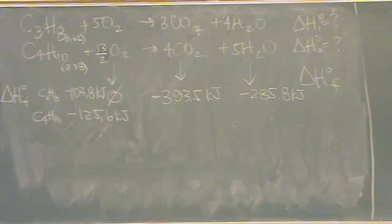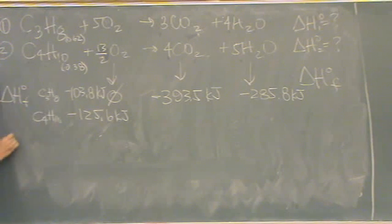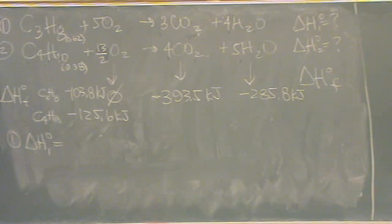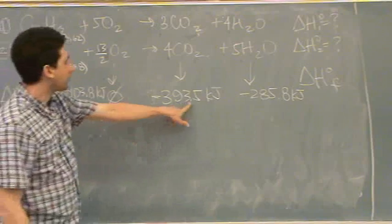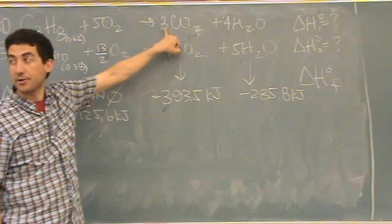Now, once you've looked up everything, you take the products, subtract from the reactants. Okay. So, I'm going to do reaction one first. I'll call this reaction one, this one reaction two. For reaction one, delta H for one is equal to the products, minus 393.5 times three. I've got to multiply by this coefficient.